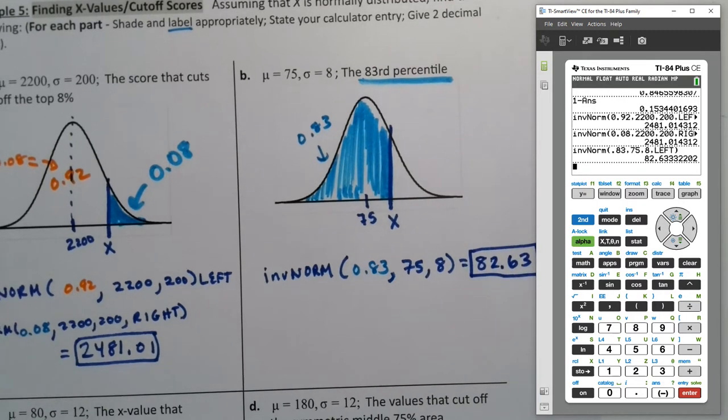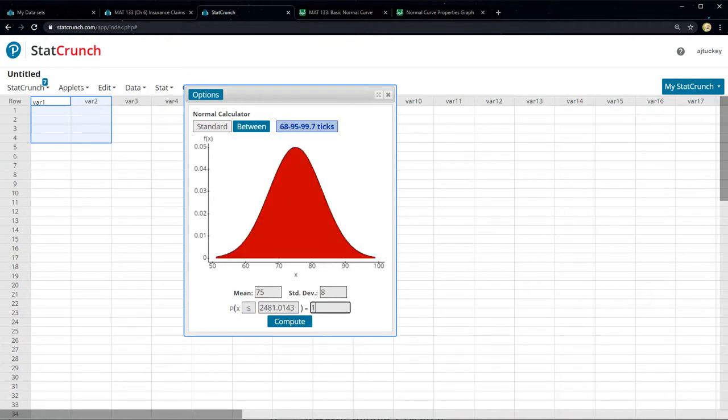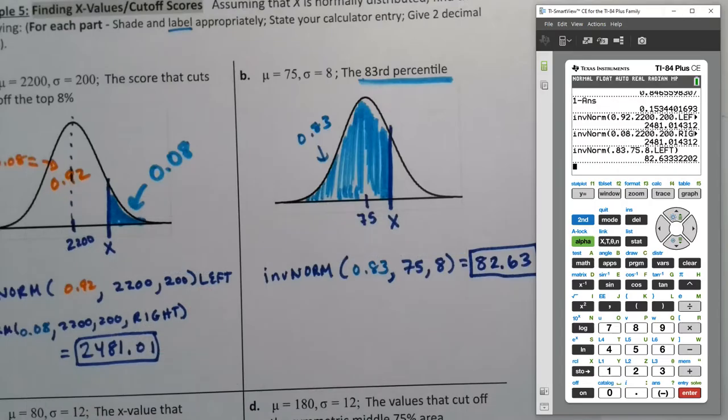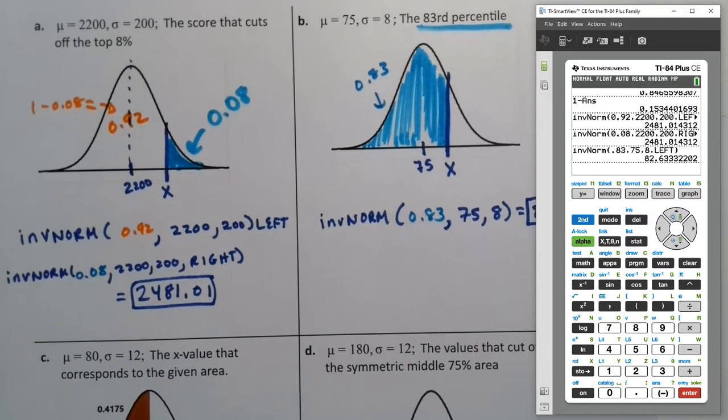In StatCrunch, you type 75 here, 8 here, and then you're thinking, I want it to be less than, but I want it to be 0.83, enter. So I want that area to be 83%, and when I press enter, it'll tell me the x value. See how the x value is inside the parentheses there? So it's giving me where that line falls. That line falls at 82.6. Again, always make sure that the picture matches what the picture looks like on your page, and you won't go wrong. Well, as long as you have a correct picture.